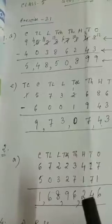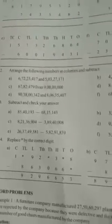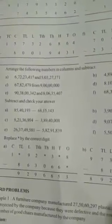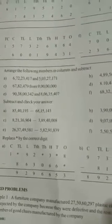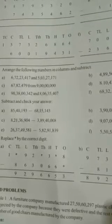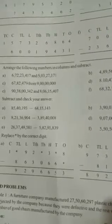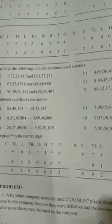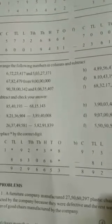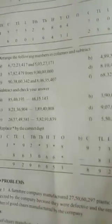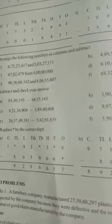Alright. Now see question number 2A from your book — sum number 2A of Exercise 3.1. Here you have to find the difference. Arrange the following numbers in columns and subtract. The first question gives two numbers: 6 crores 72 lakhs 23,417 and 5 crores 3 lakhs 27,171. See which number is greater, write that first, and then subtract. But if it is given to subtract one number from the other, then write the number from which you have to subtract first.